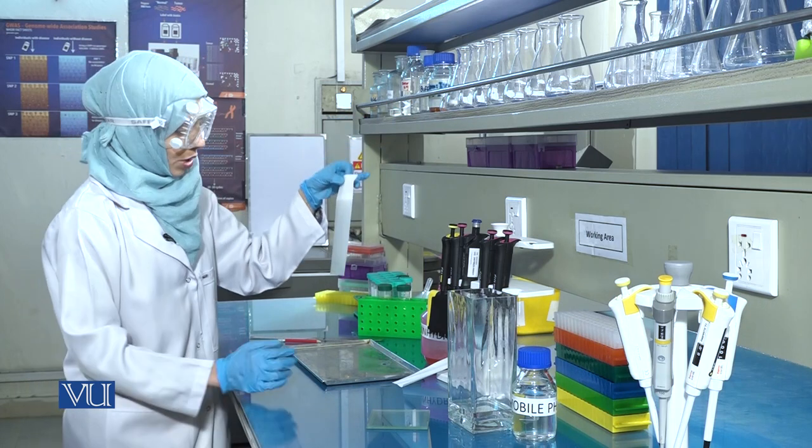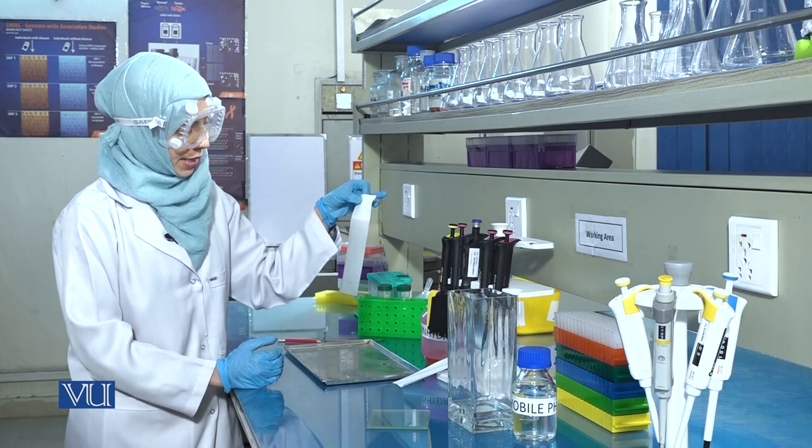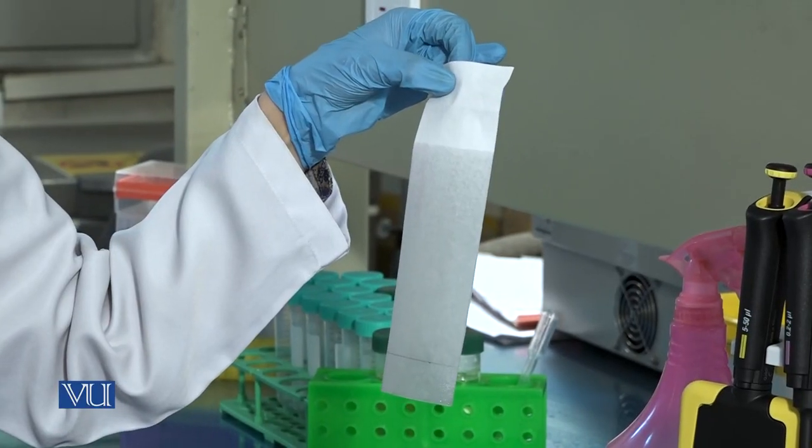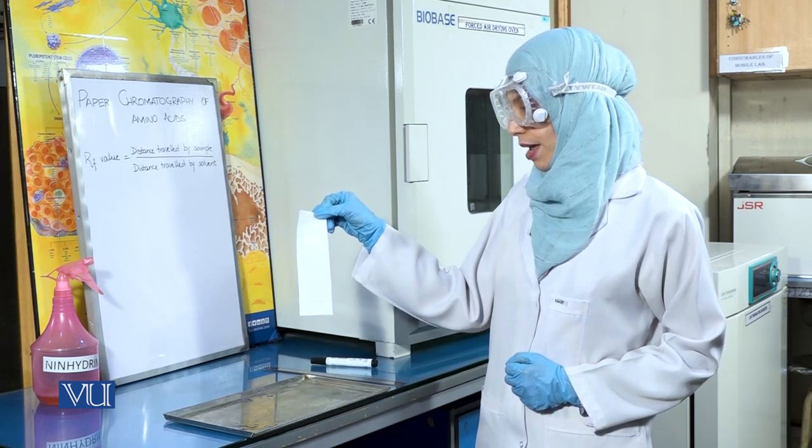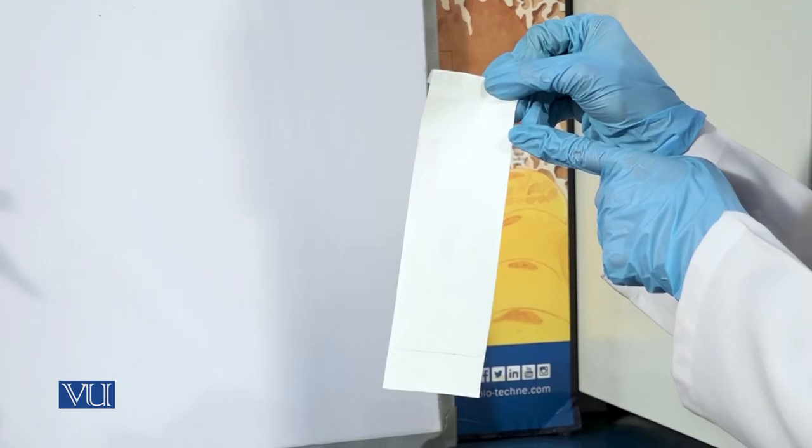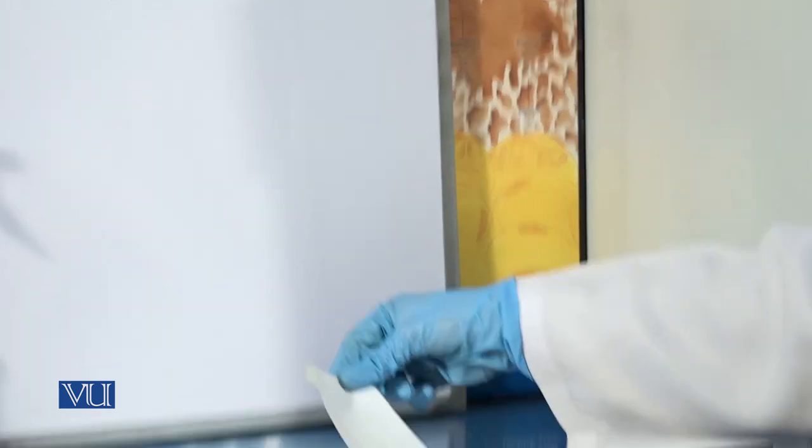Allow the chromatogram to dry completely in the air before moving on to the next step. Once the chromatogram has dried completely in the air, mark the distance travelled by the solvent with a lead pencil. This is known as the solvent front.